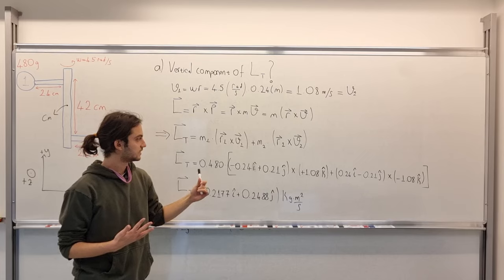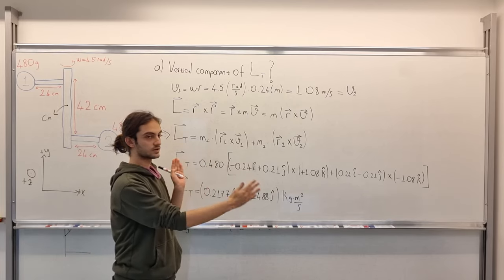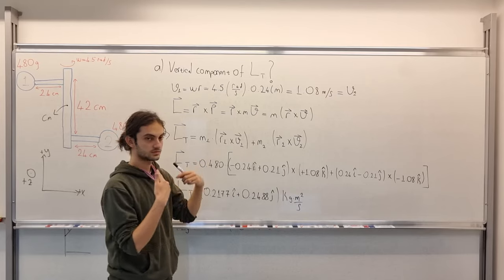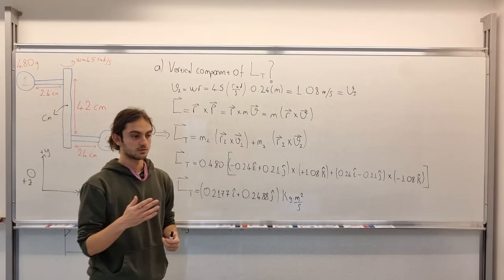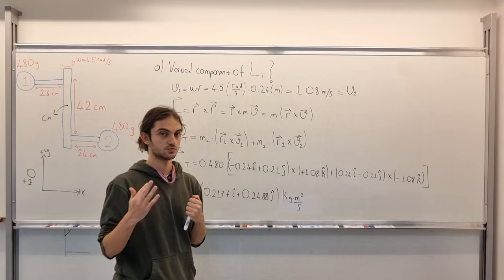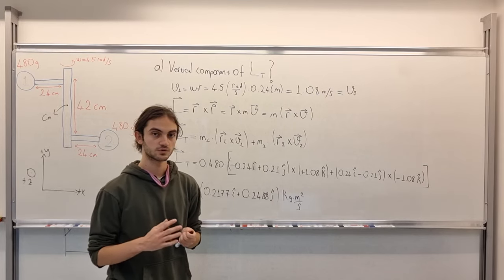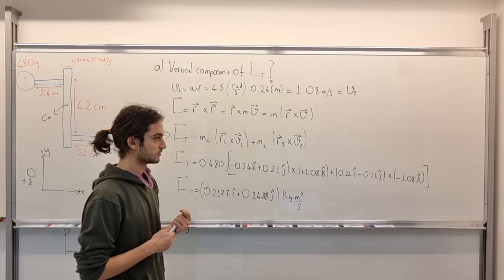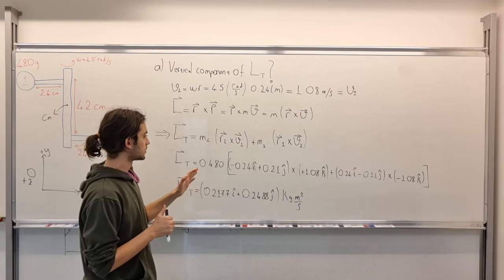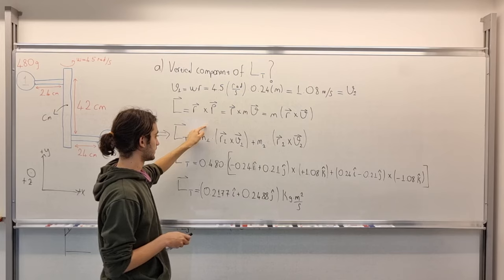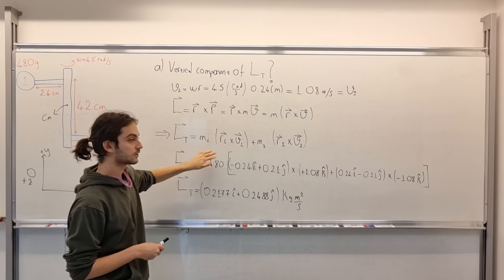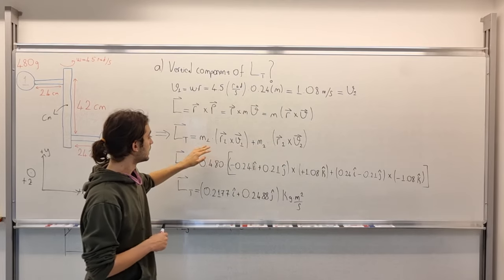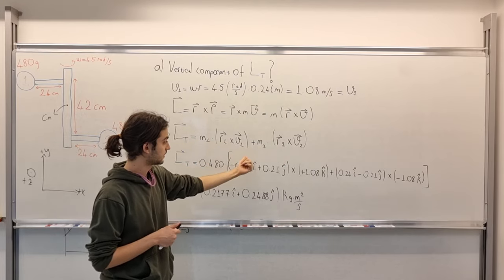To find L-total, we first write it in a longer, in an expanded form. So, M1, remember we need to calculate the L1 and L2 first, the angular momentum of object 1 and 2 respectively. Then, add them, simply. So, M1, this thing here you see, is the angular momentum of the first object and this is of the second object. M1 times R1, cross product V1.